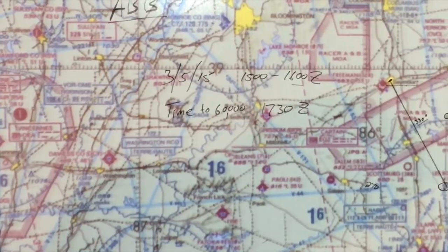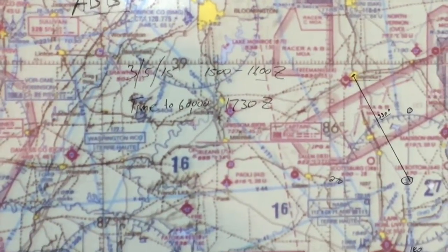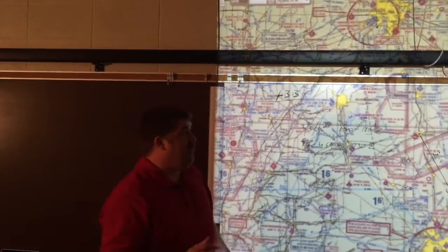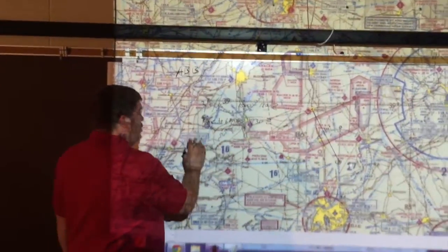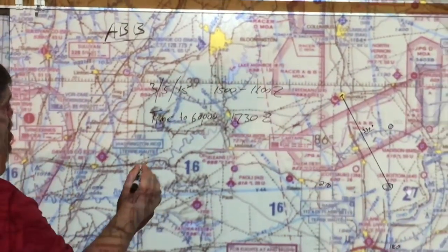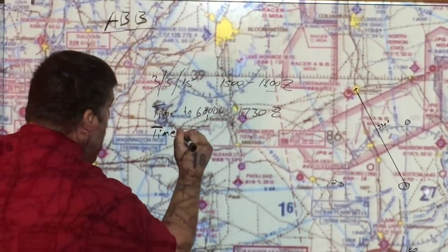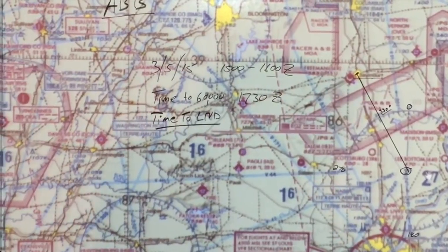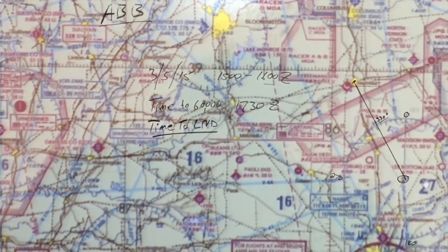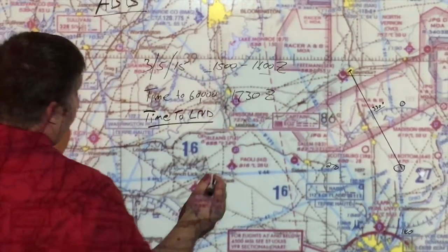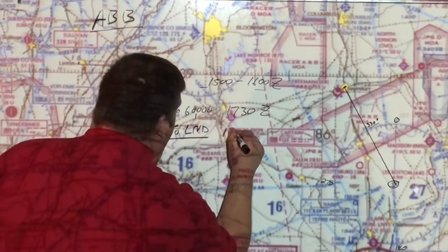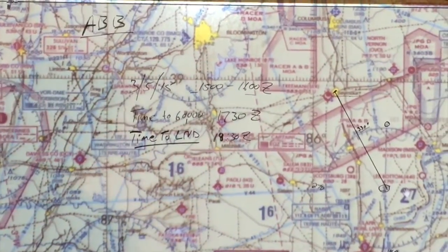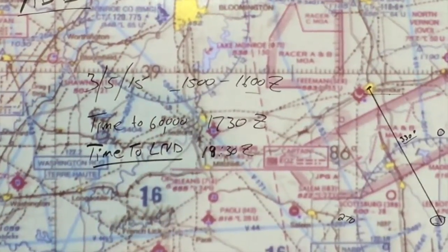Next thing they're going to be concerned with is time to landing of your payload. This thing has to go all the way up to 100-some-odd thousand feet and then come all the way back down on a parachute. The time they're concerned with is the time to completion — launch, climb, descend. The folks that put the kit together say give yourself a total of 3 hours and 33 minutes. Taking 3 hours 33 minutes added to our 1500 launch time brings us to 1830Z.